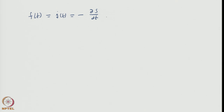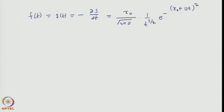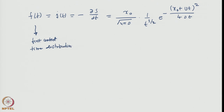We simply write down the result. This turns out to be a neat-looking expression of the form: x-naught divided by (4πD)^(1/2) times t^(3/2), times e to the power minus (x-naught plus u·t) squared divided by 4D·t. This is the first contact time distribution, which is equivalently the probability current — they are equivalent.